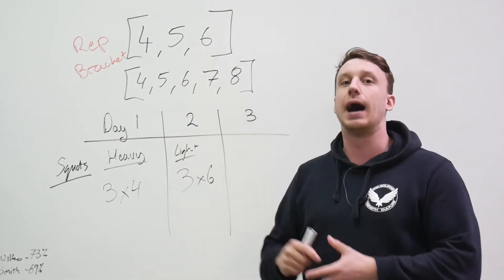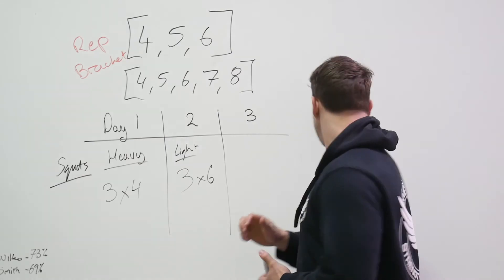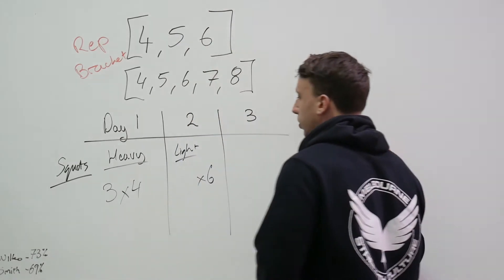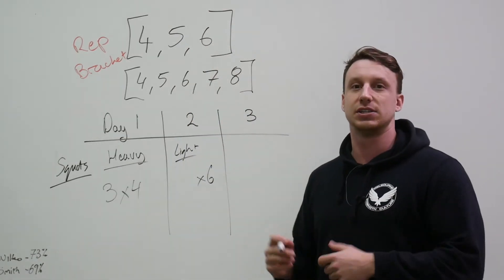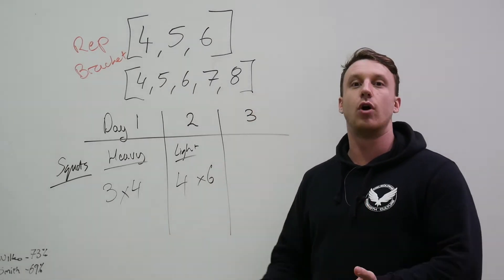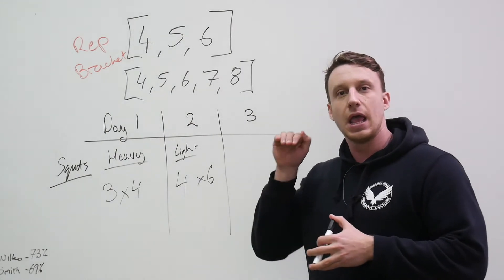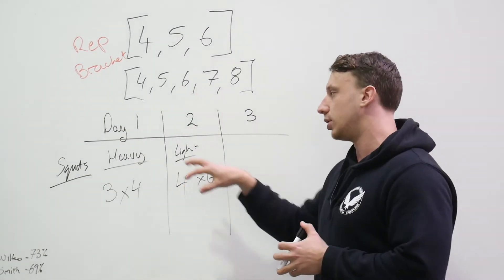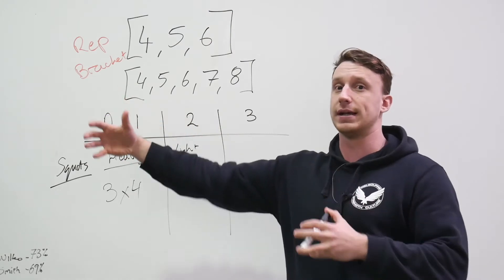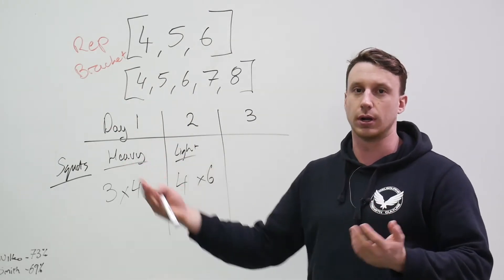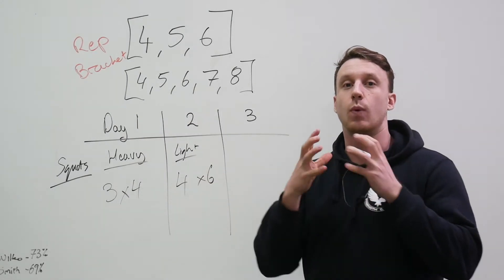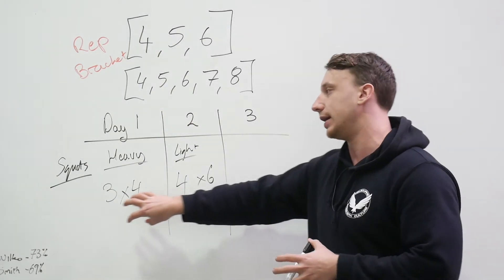As your program progresses and you hit a plateau with increasing weights in that six-rep range, you can increase the sets on that lighter day to drive volume up again. You start to see that progressive increase in volume — sets times reps times weight — across a week and across a training cycle, and how that progression from program to program will ultimately make you stronger and bigger. That's how you go about progressing from one-day-a-week into a two-day-a-week training frequency.